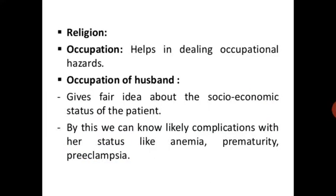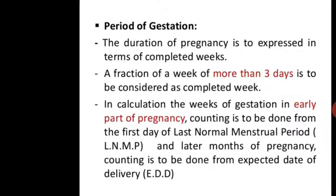Religion and occupation: occupation helps in dealing with occupational hazards. The occupation of the husband gives a fair idea about the socioeconomic status of the patient. By this, we can know likely complications associated with her status, such as anemia, prematurity, and preeclampsia.